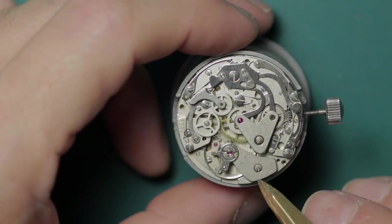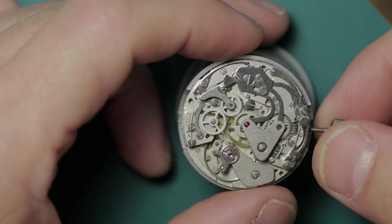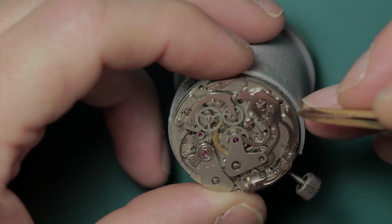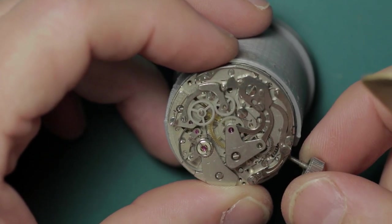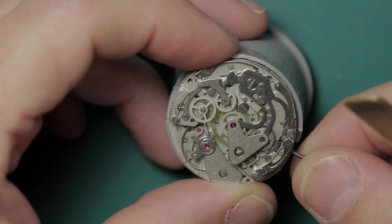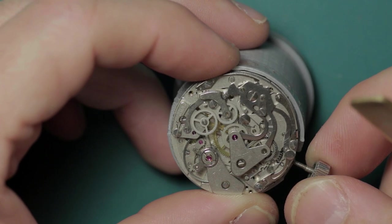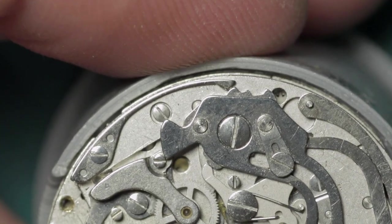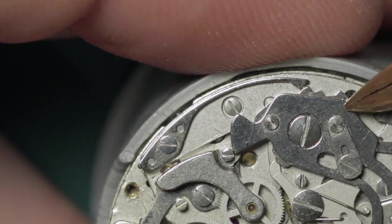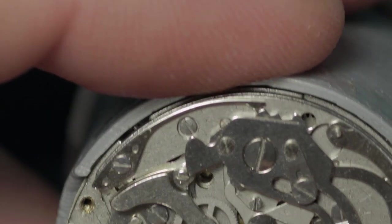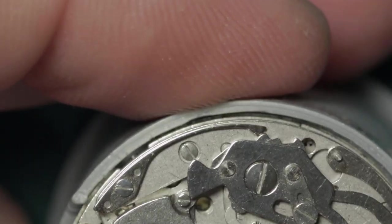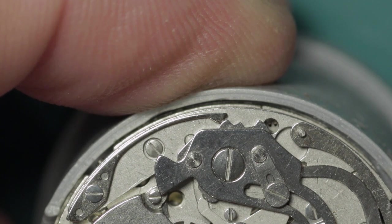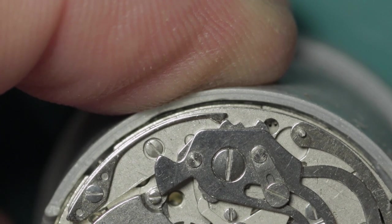We will begin the disassembly on the movement side, removing the balance and the pallets after making sure that the energy has been let down, which I've already done. For informational purposes, you've got this little access hole just down here. If I turn the crown, you'll be able to see. I'm going to zoom in so you can see that.